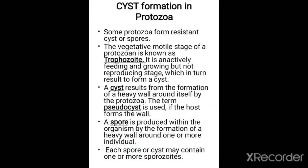Now let us come to cyst formation in the protozoa. Some protozoa form resistant cysts or spores. The vegetative motile stage of protozoa is known as the trophozoite — it is an actively feeding and growing but not reproducing stage. The trophozoite will in turn result in the formation of a cyst.